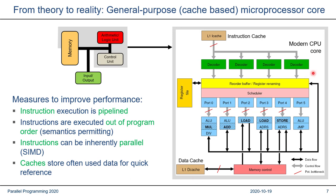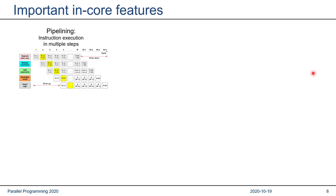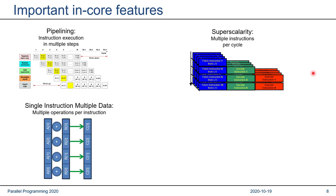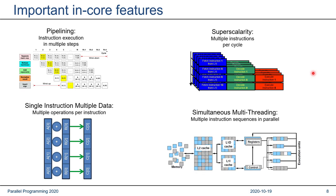This is the basic architectural principle, and it's quite generic. It was motivated by a specific Intel processor which appeared about 10 years ago, but it's valid for many standard processor designs today. Let's look at the four most important in-core features — not counting cache — that are relevant for speeding up code execution: pipelining, superscalarity, single instruction multiple data, and simultaneous multithreading.